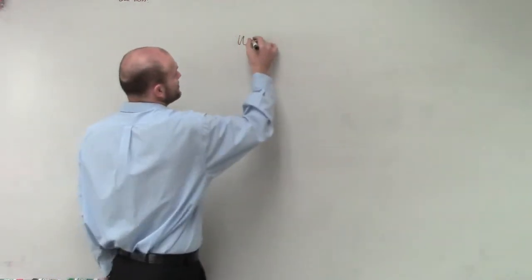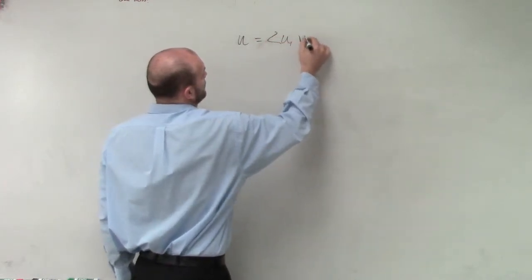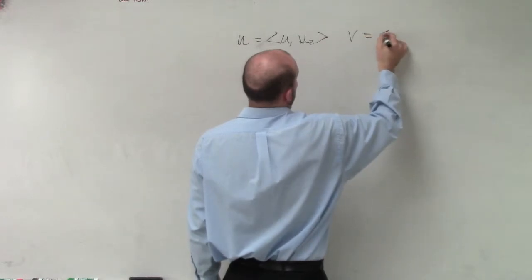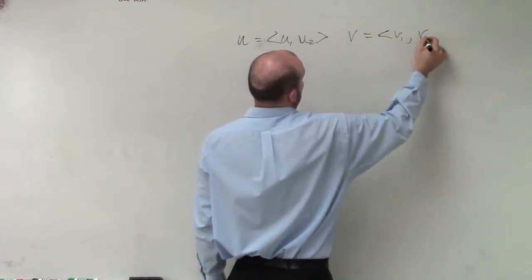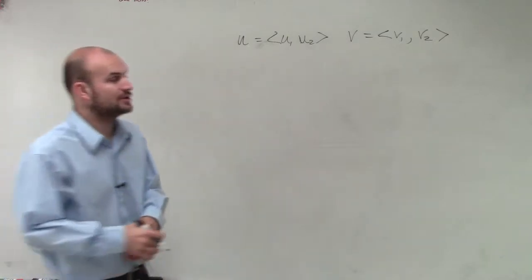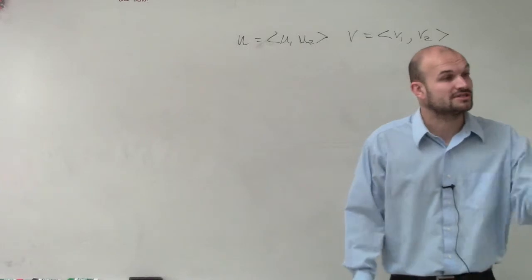So, for the next one that we need to talk about, let's say I have my two vectors, u and then v. So I have my vectors u1 and u2, and then I have my vectors v1 and v2. Now, we already talked about it in our addition, yes?